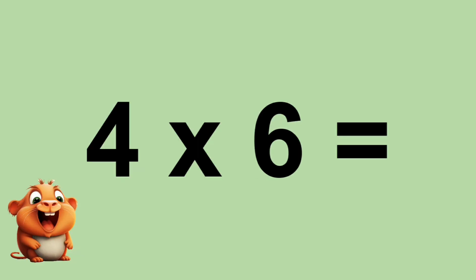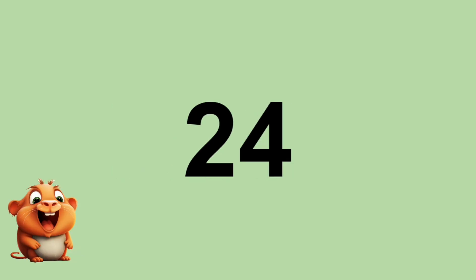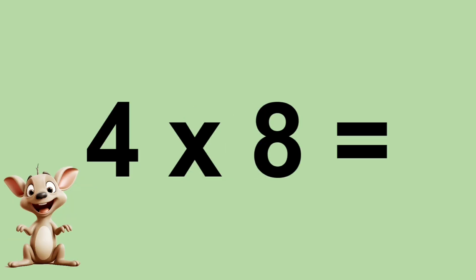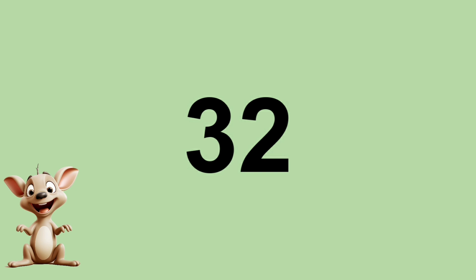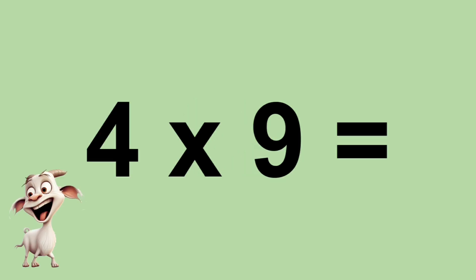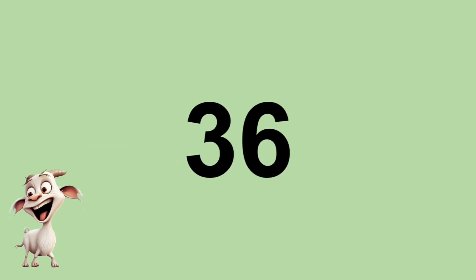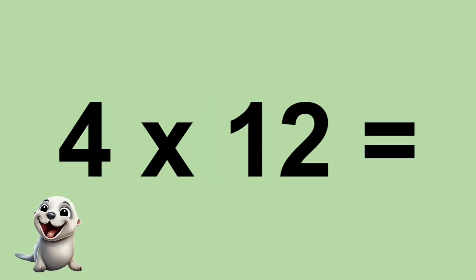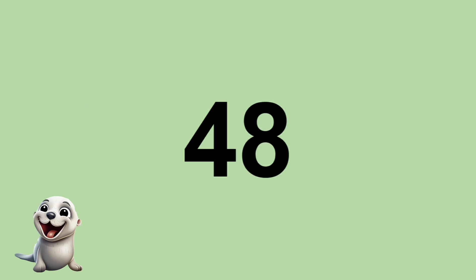Four times six equals twenty-four. Four times seven equals twenty-eight. Four times eight equals thirty-two. Four times nine equals thirty-six. Four times ten equals forty. Four times eleven equals forty-four. Four times twelve equals forty-eight.